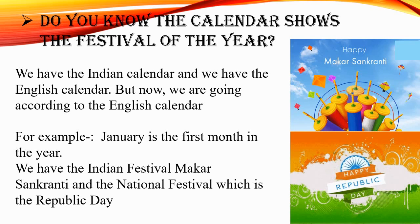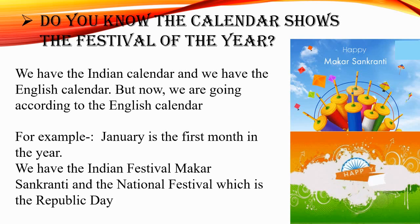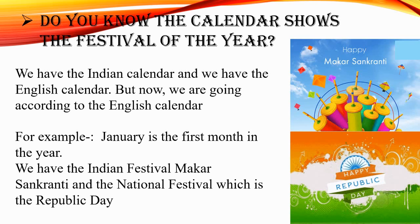For example, January is the first month in the year. We have the Indian festival Makha Sankranti and the National Festival Republic Day. These two festivals are fixed on that day. Republic Day is celebrated as a National Festival on 26th January, and Makha Sankranti is on 14th January. So these festivals are fixed festivals.